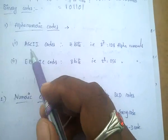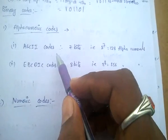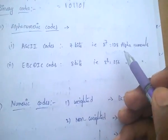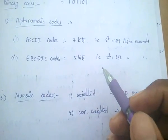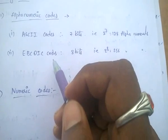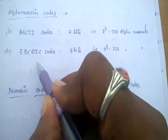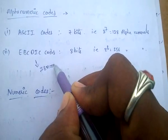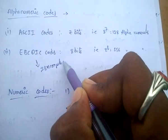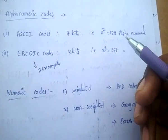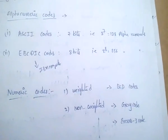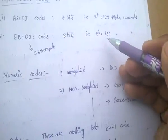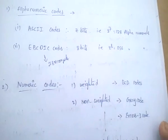Coming to the alphanumeric codes, the first one is ASCII codes. ASCII codes has 7 bits, that is 2 power 7 alphanumericals. And EBCDIC codes — these are used in IBM computers. These are 8 bits, that is 2 power 8, that is 256 alphanumericals.